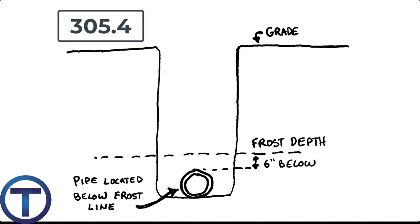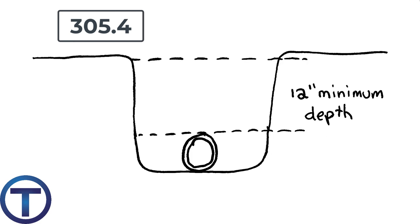305.4 talks about protecting pipes against freezing. We have to dig down past the frost line — code says you have to be six inches below that frost line. Generally, if you're about four feet deep in Cache Valley, you're deep enough to avoid freezing. In southern Utah, St. George, Arizona, or places where you don't get much frost, the pipe should be no less than 12 inches below the finished grade. Those are important numbers to have marked in your book.